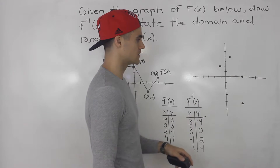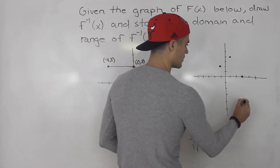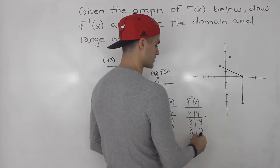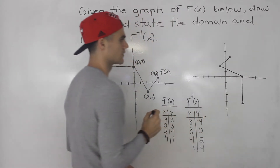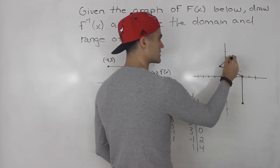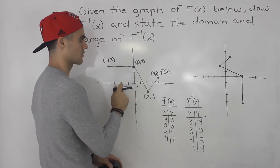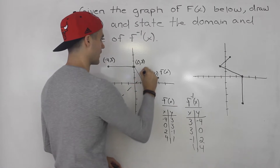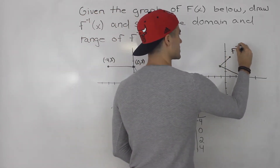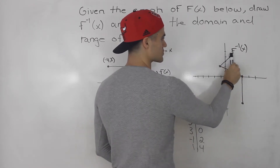Now that we have the coordinates plotted, what you want to do is connect them in this order: 3 and negative 4 to 3 and 0, then 3 and 0 to negative 1 and 2, and then negative 1 and 2 to 1 and 4. You want to make sure you do it in this order, because it's easy to maybe connect the wrong dots. Remember, this is the inverse of this function — if we take this function and reflect it on the y equals x line, we end up with this relation. Notice that it's not a function because it fails the vertical line test at multiple points.